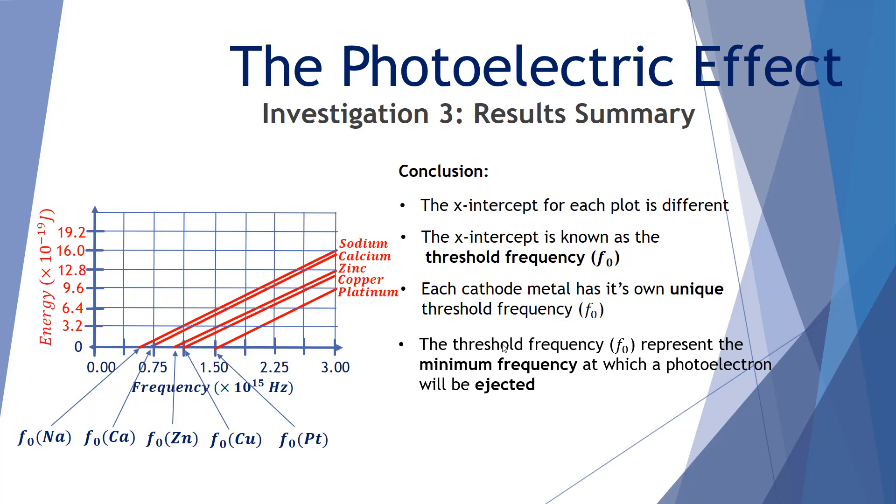The threshold frequency represents the minimum frequency at which a photoelectron will be ejected. If we go below that frequency, no photoelectrons will be ejected at all. This is the minimum frequency. At the threshold frequency, the photoelectron has no kinetic energy whatsoever. So if we look at sodium here, here's our threshold frequency. If we go above that value, we read across, there is some kinetic energy for the photoelectron. If we go a long way past that frequency, we find we have considerable kinetic energy for the photoelectron.